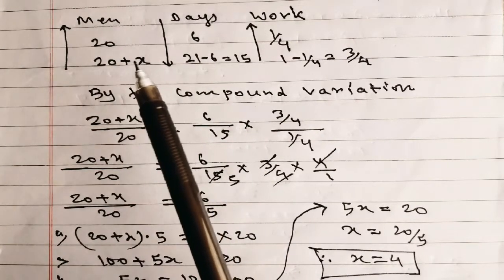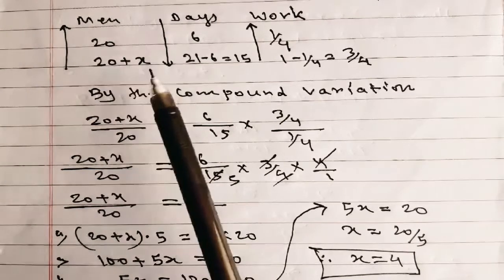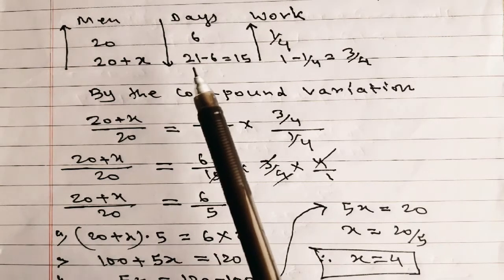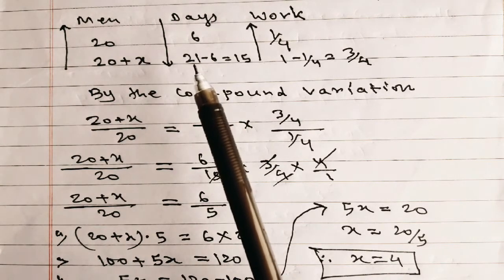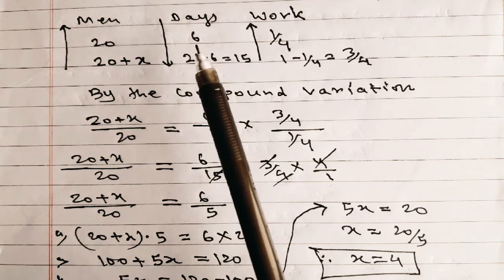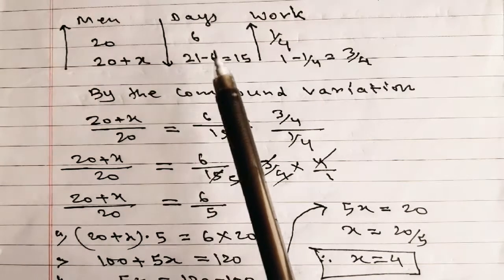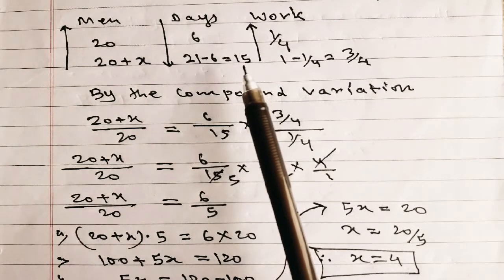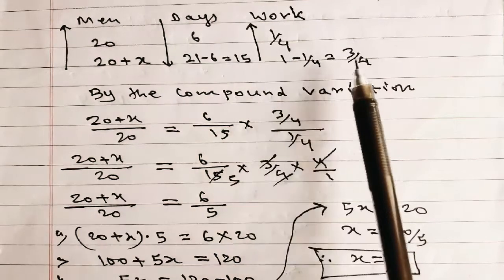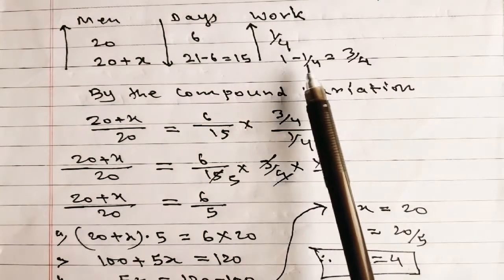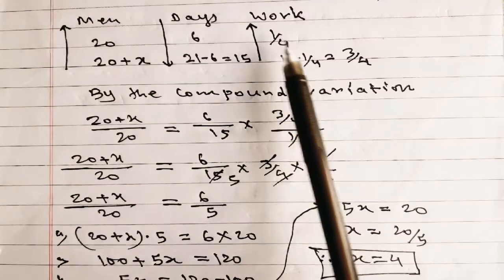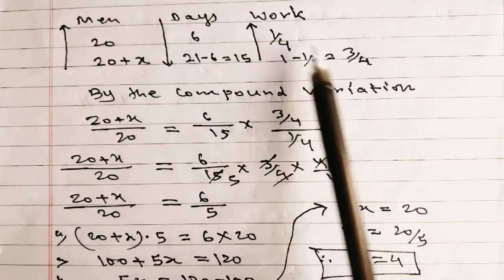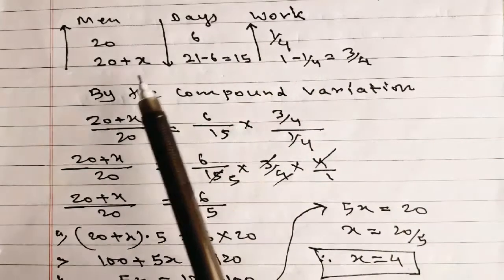After six days, an additional number of men x is added, so total men = 20 + x. The work is completed in 21 days from the beginning, so the remaining days = 21 − 6 = 15. The remaining work = 1 − 1/4 = 3/4.